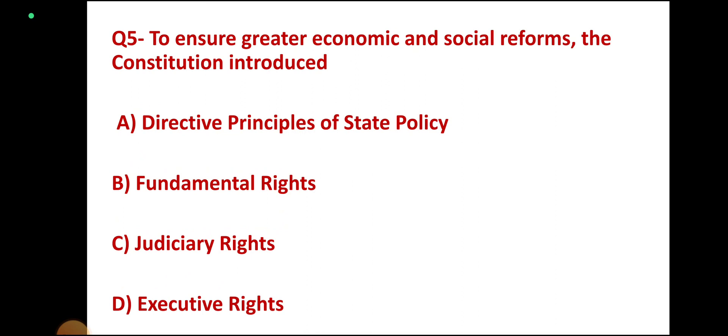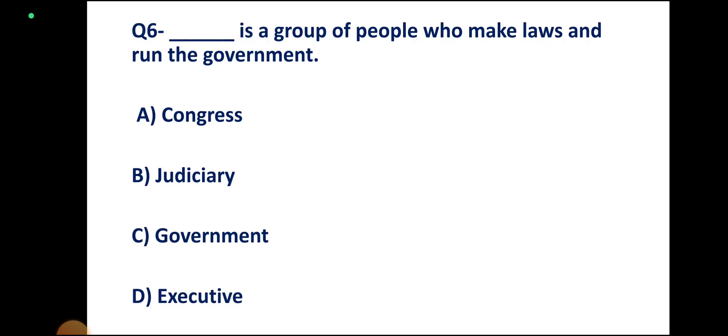Question number 5. To ensure great economic and social reforms, the Constitution introduced which of the following? Options: Directive Principles of State Policy, Fundamental Rights, Judiciary Rights, Executive Rights. Correct answer: Option A, Directive Principles of State Policy.